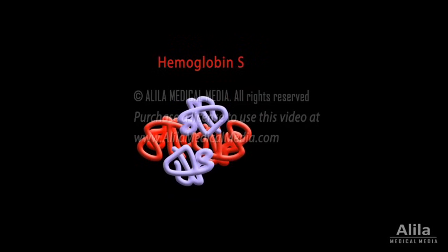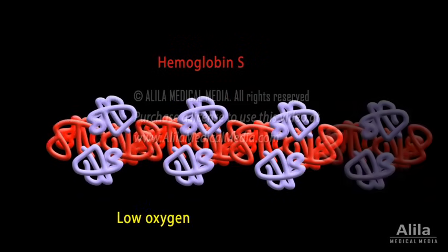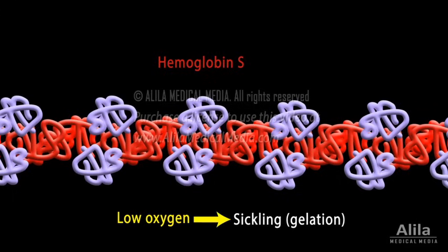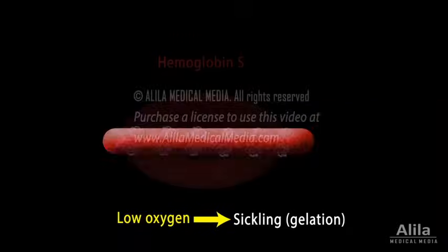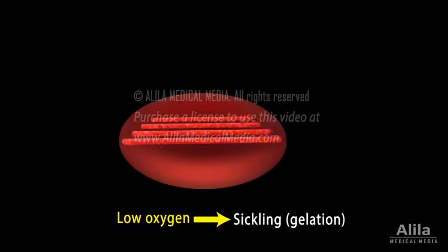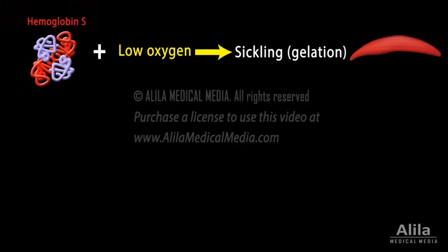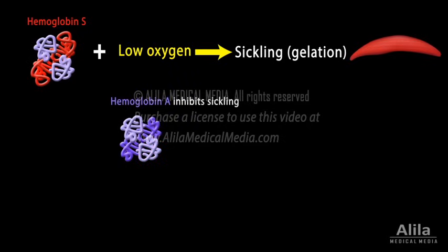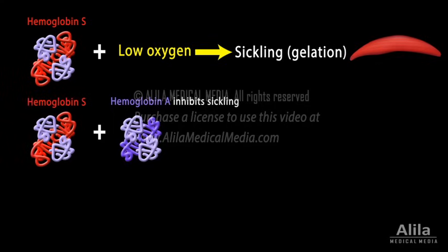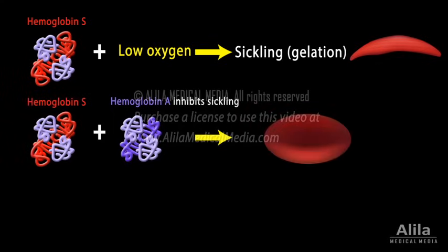Hemoglobin S has the tendency to form polymers under low oxygen conditions. This process is called sickling, or gelation, for the gel-like consistency of the resulting polymer. As the polymer filaments grow, they eventually involve the cell membrane and distort the cell into the characteristic crescent shape. Apart from oxygen tension, the presence of other hemoglobins also seems to affect the sickling process. Normal adult hemoglobin inhibits sickling, and this explains why heterozygous parents, who produce both mutated hemoglobin S and normal hemoglobin A, do not usually develop the disease.